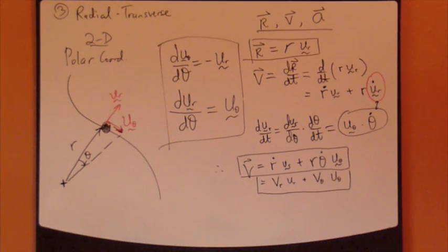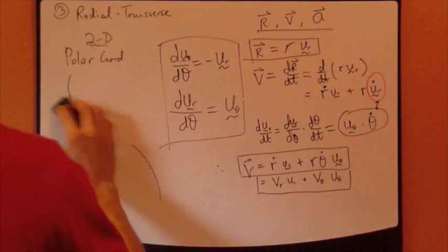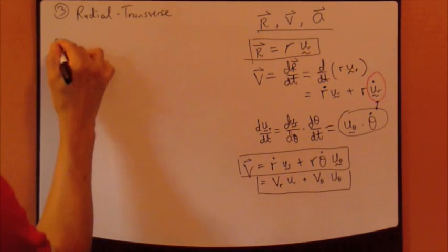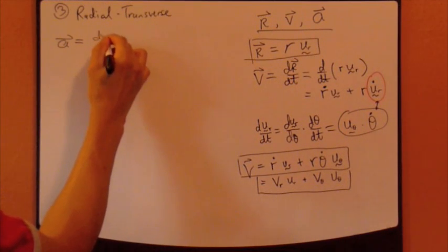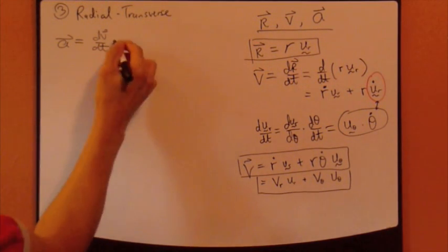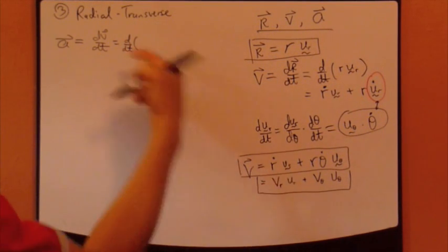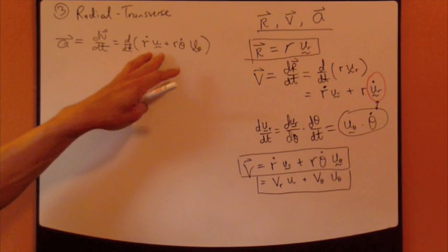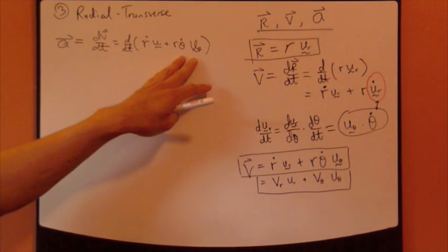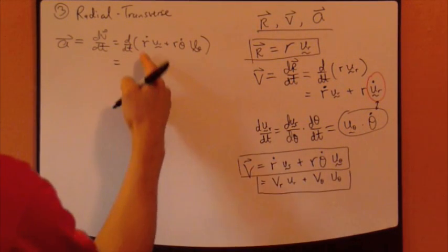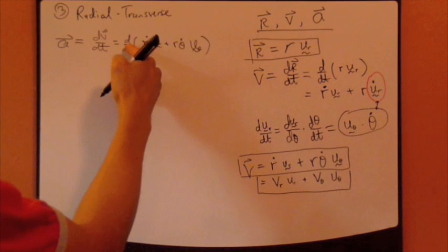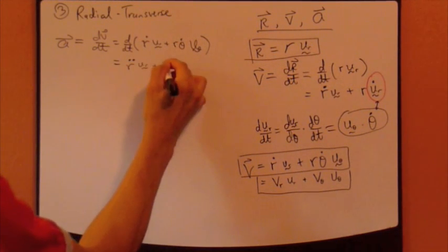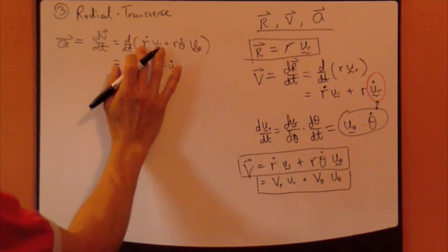Now let's look at acceleration. Acceleration derivation is very similar. So r_dot·u_r plus r·θ_dot·u_θ here. Same thing, chain rule. Exactly what we did here, it's just a couple more terms that's all. So this comes r_double_dot u_r plus, keep this term, r_dot·u_r_dot. So the first term is taken care of.